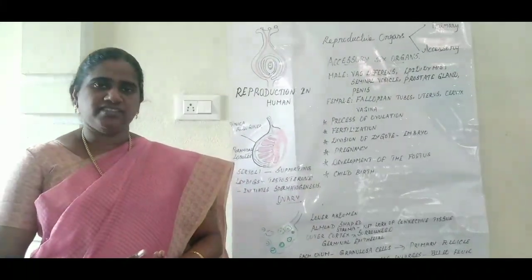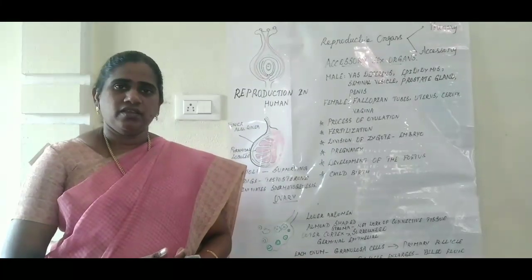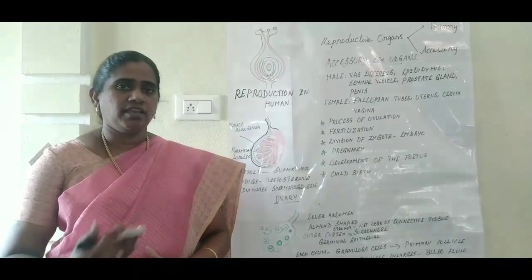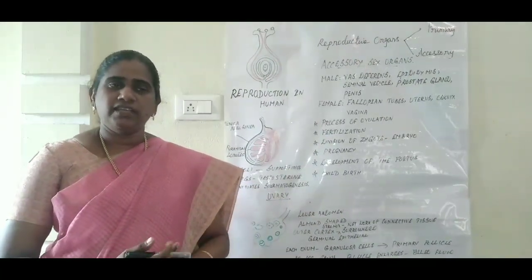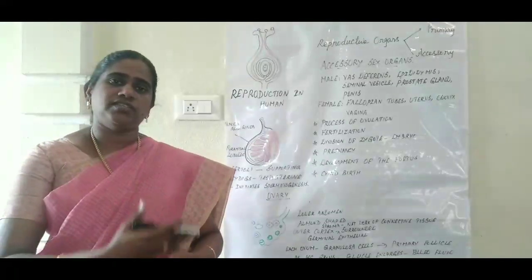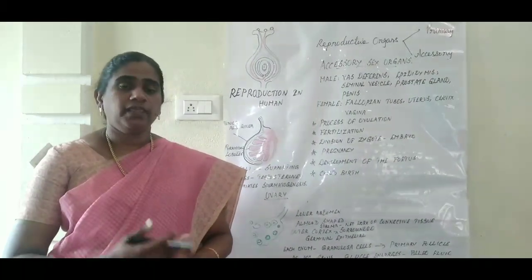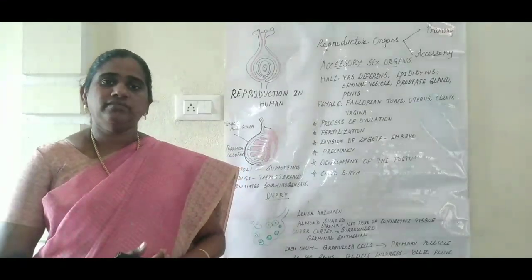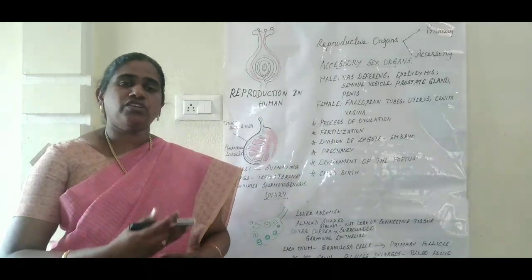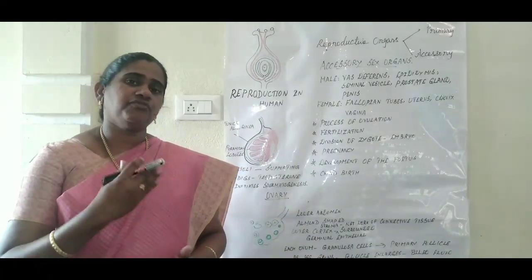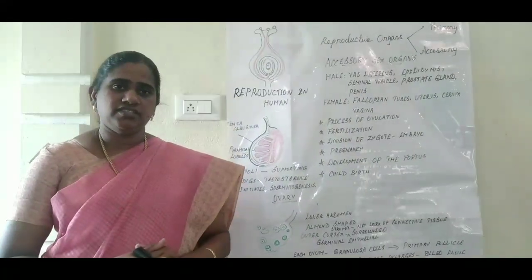Come to the topic — Fertilization. In sexual reproduction, plants have two processes. The first process is pollination, and the second process is fertilization. Pollination, which we learned in the previous session, is the transfer of pollen grains from the anther to the stigma of a flower. Two types of pollination are self-pollination and cross-pollination. Pollination is followed by fertilization. Fertilization is the process of fusion of the male and female gamete. As a result, the male gamete sperm fuses with the female gamete egg to form a zygote. This process is called fertilization.